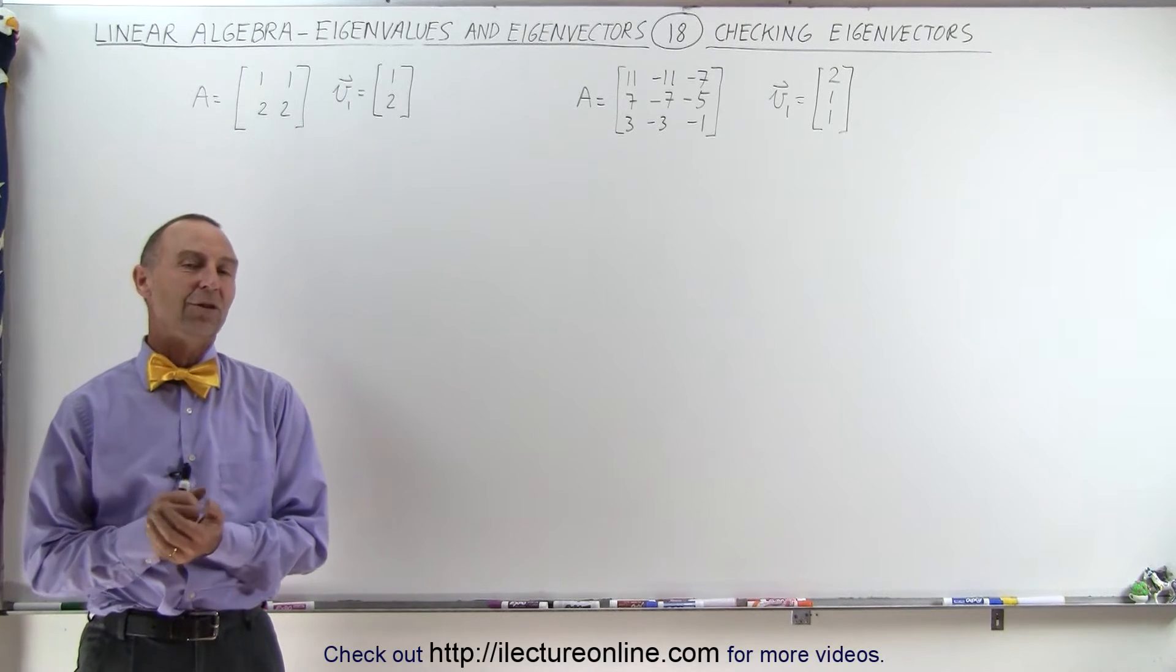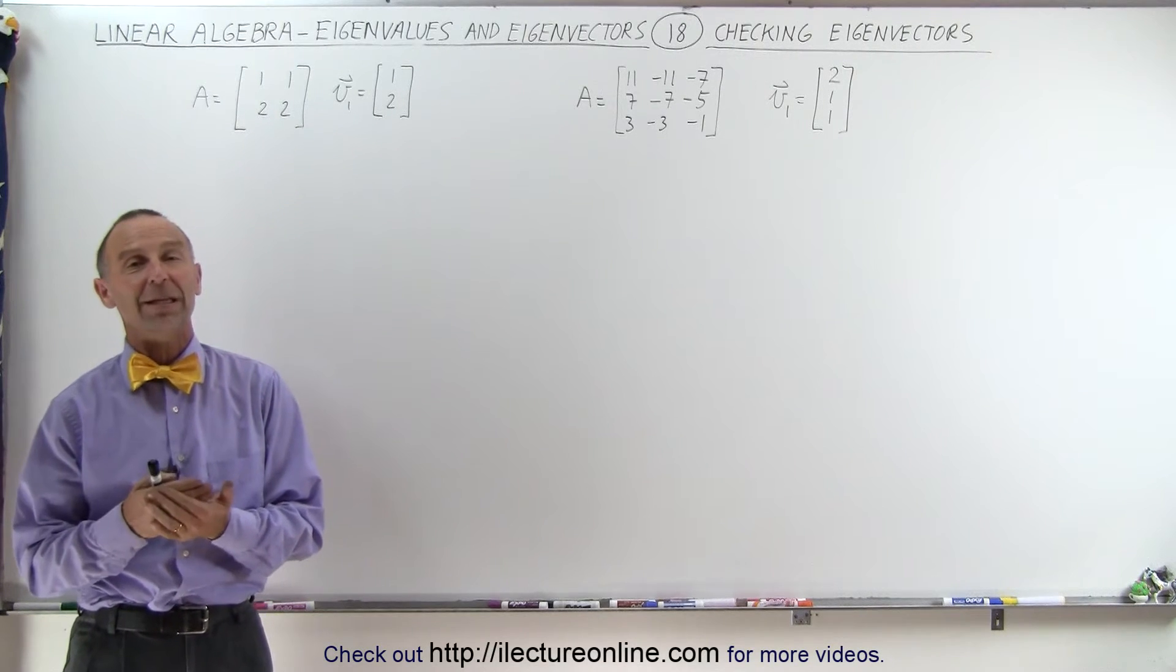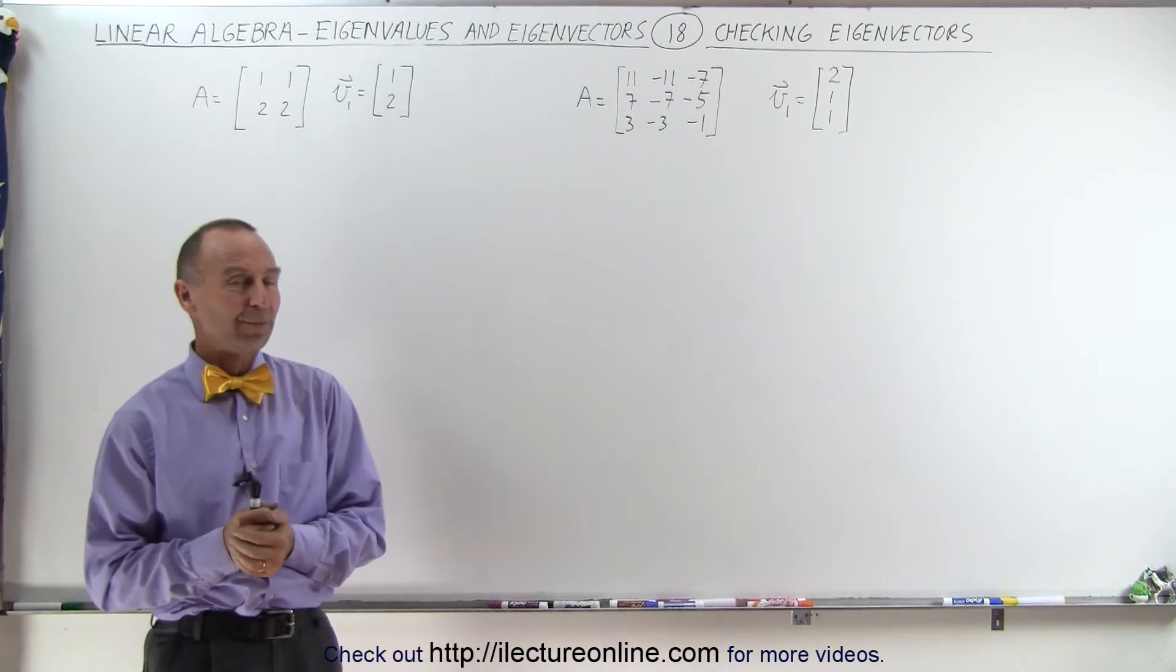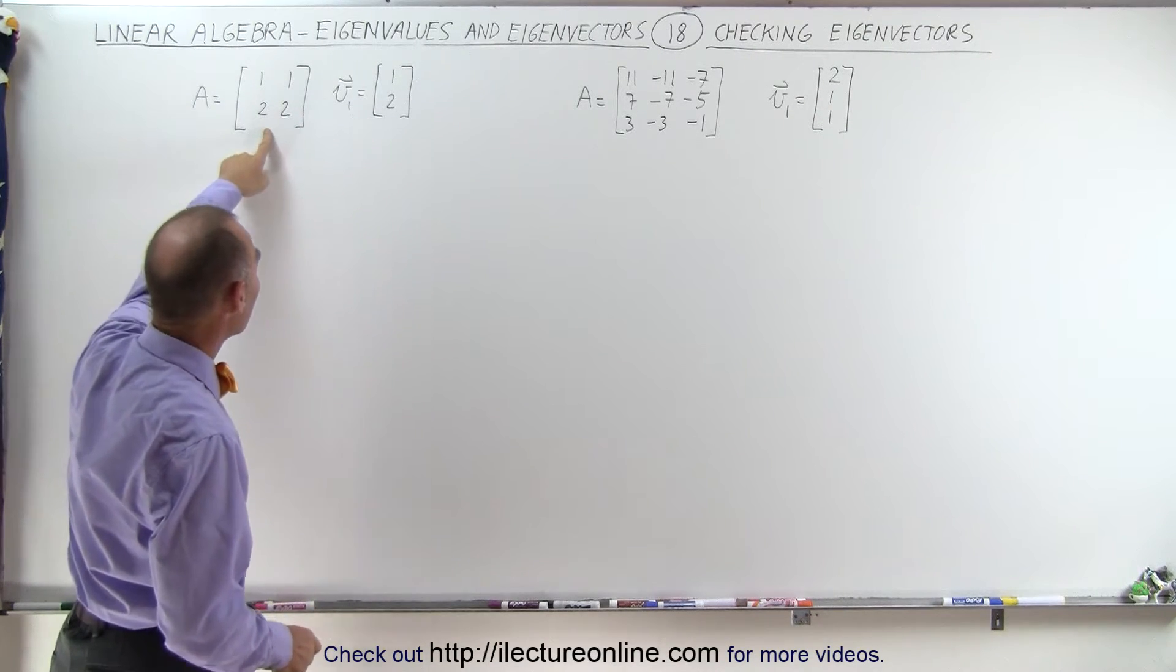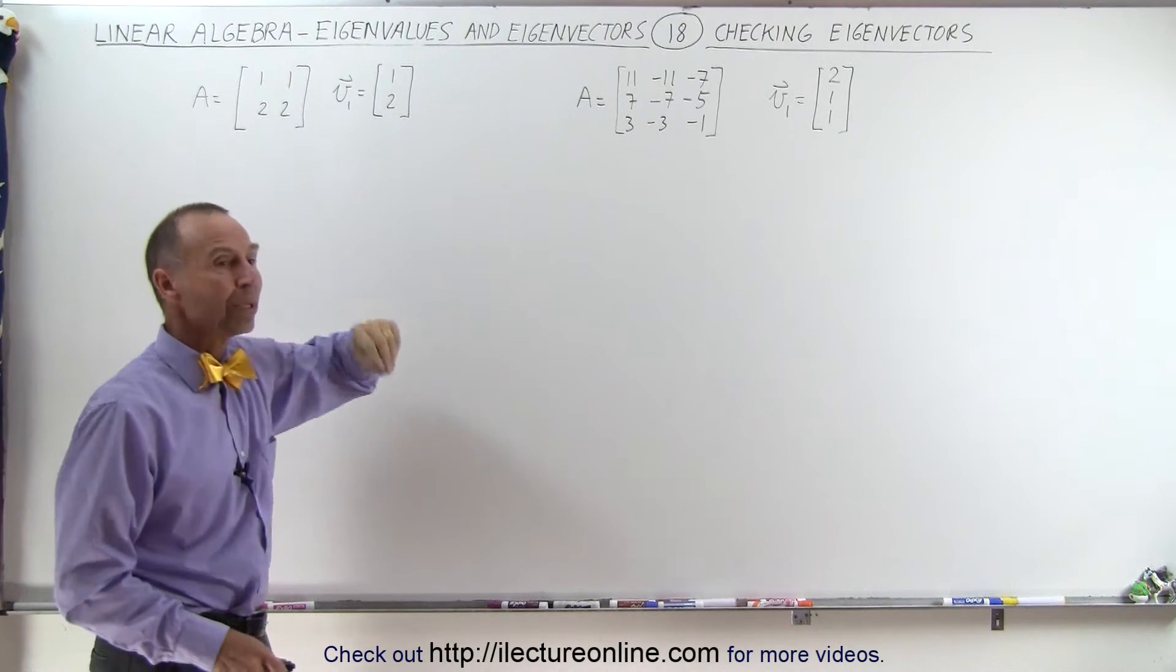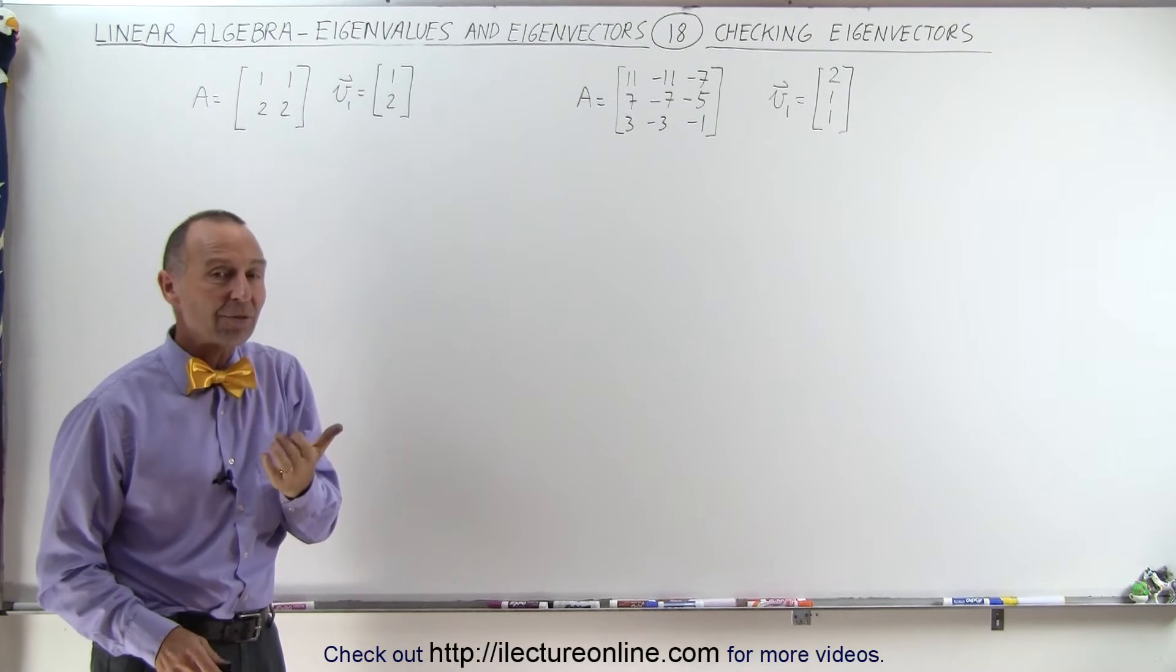Welcome to ElectronLine. There's a very interesting property about eigenvectors. It turns out if you multiply the original matrix by its eigenvector, you will get a resulting matrix that is